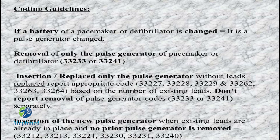For removal of transvenous electrode by transvenous extraction, we assign 33234 or 33235. The same transvenous electrode removal using thoracotomy is 33238 or 33243. The removal of subcutaneous implantable defibrillator is 33272. The removal of leadless pacemakers uses codes 33212, 33213, 33221, 33230, 33231, or 33240.